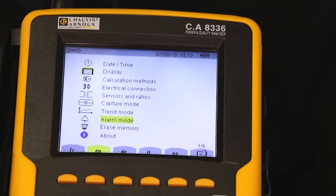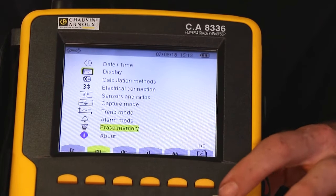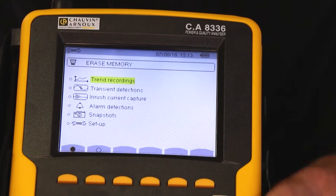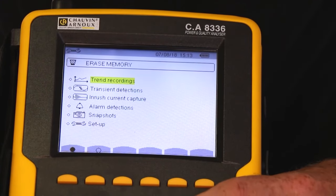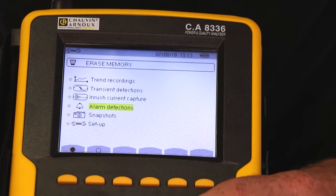The next setup key down enables me to erase the product's memory. I can either erase trend recordings, any transient detections, inrush captures, alarm detections, or any snapshots. Or I can in fact erase the setup and go back to default settings.